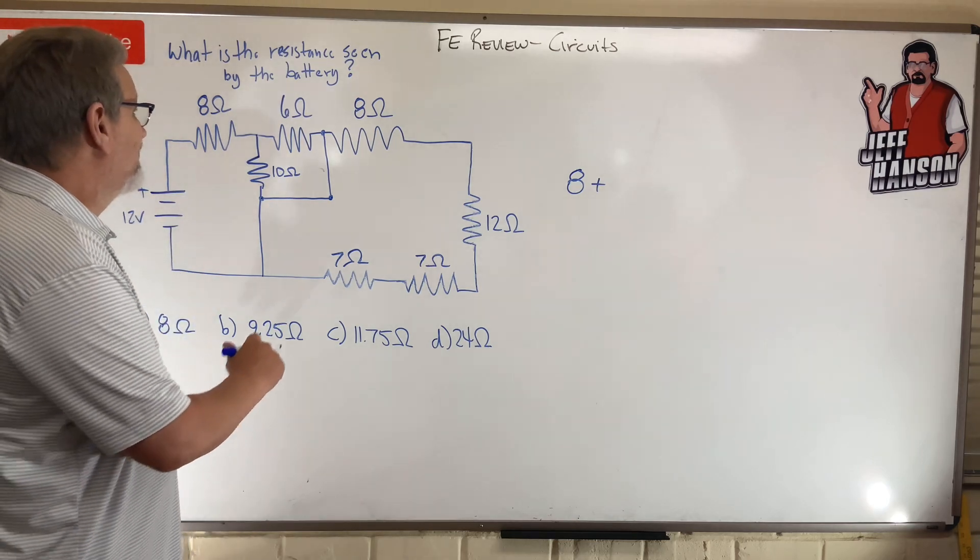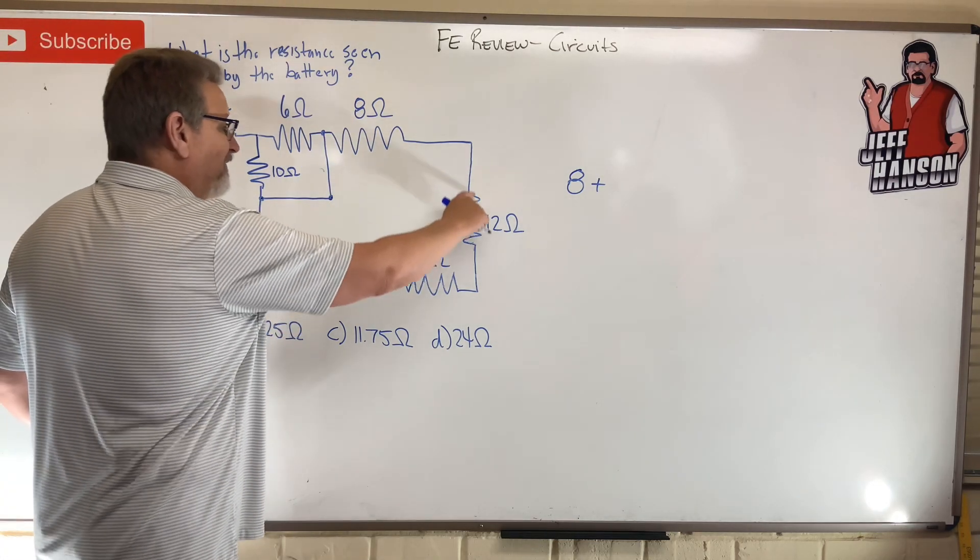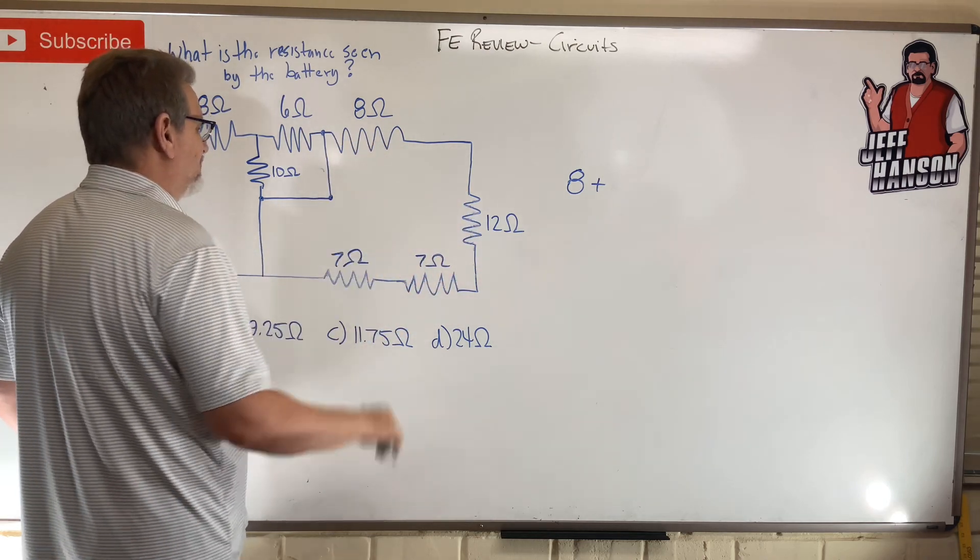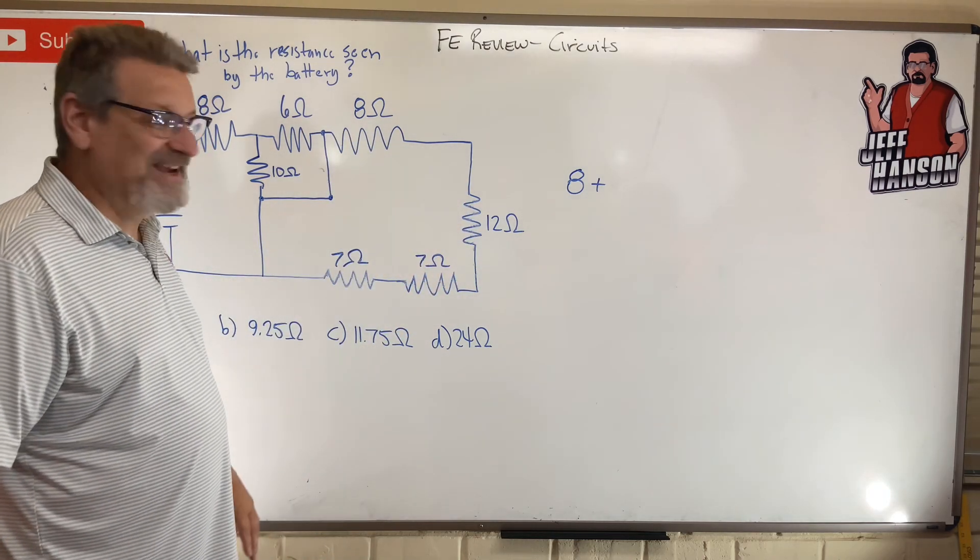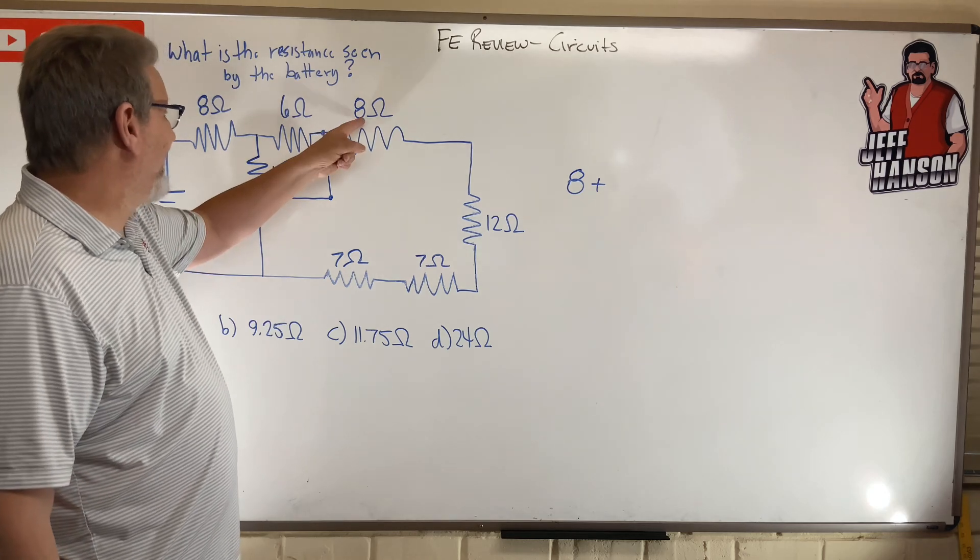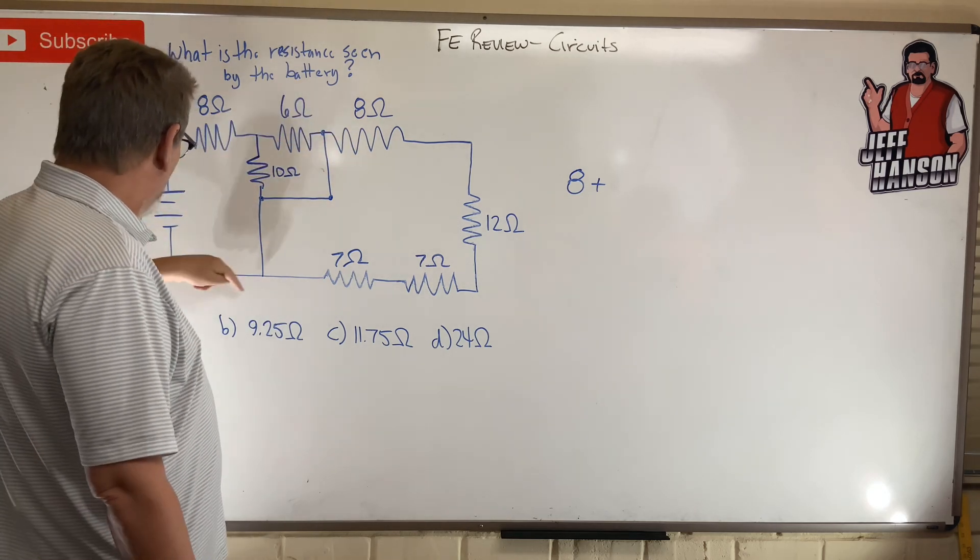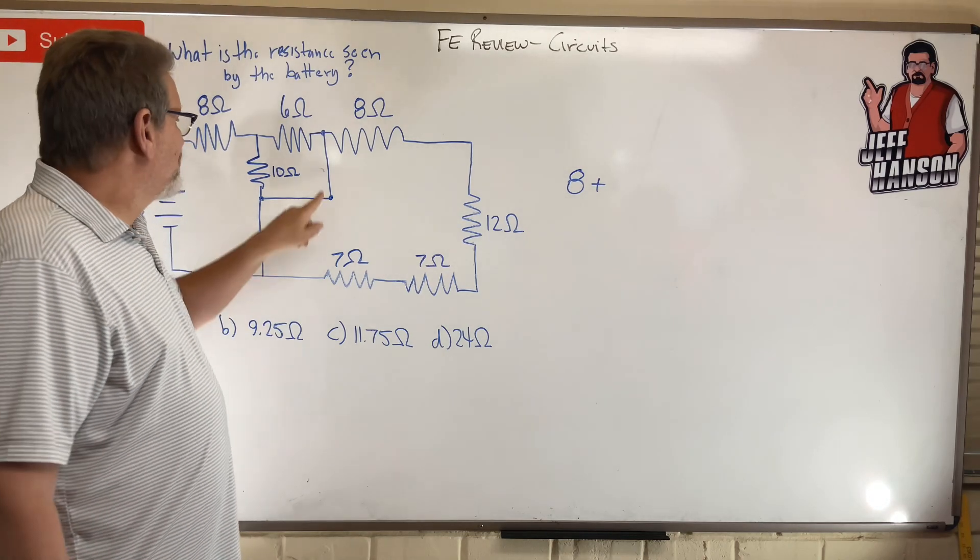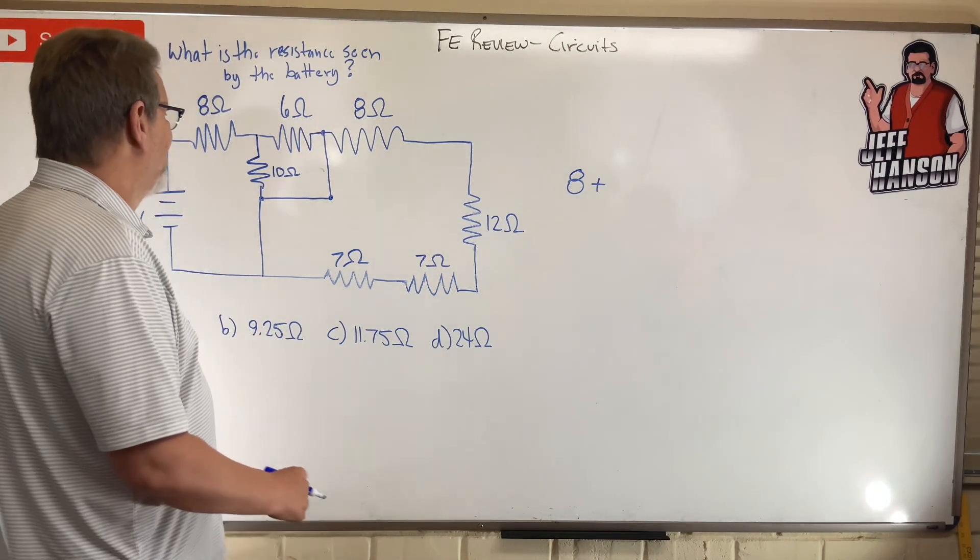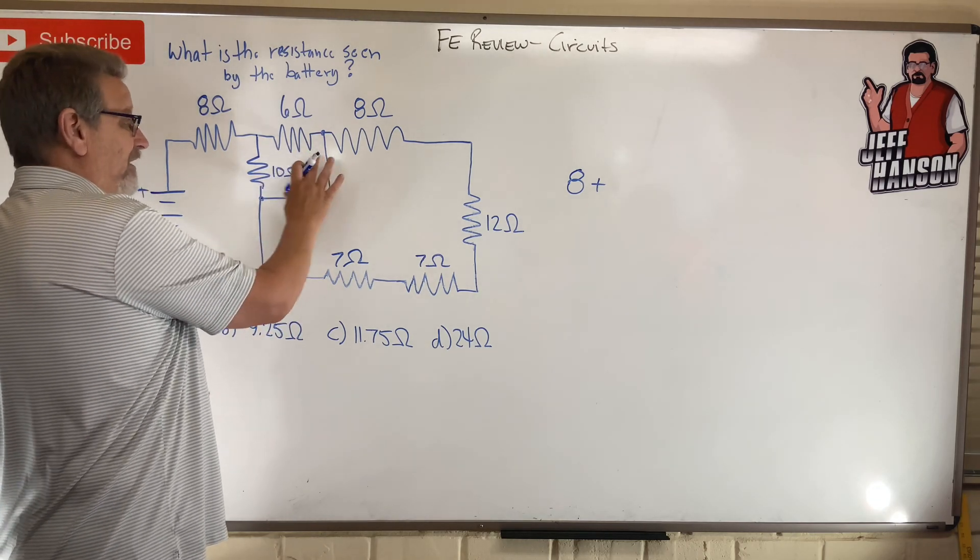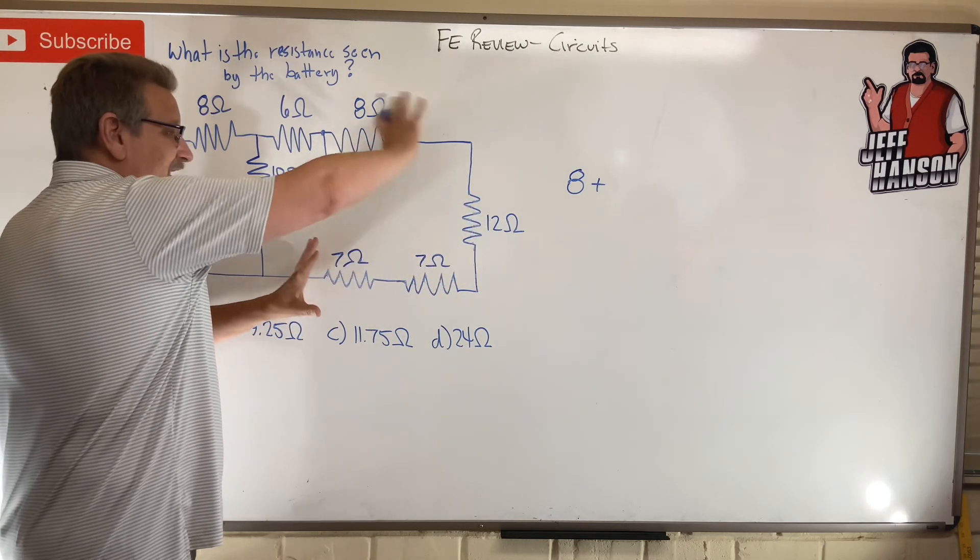But what about all of this over here? What about all of that? It ain't going that way. It's like, oh man, there's eight ohms of resistance that way or how much is this way? None. So we call that a short circuit, don't we? So these two guys here are the only ones in parallel. The rest of this is short circuit. It will not have any electricity going through it.